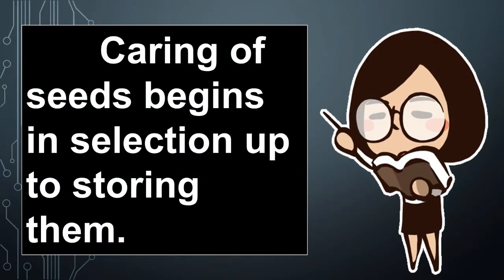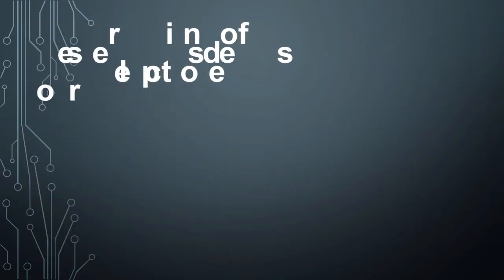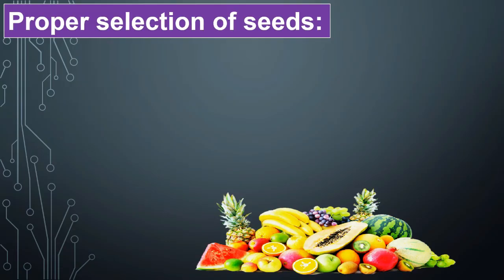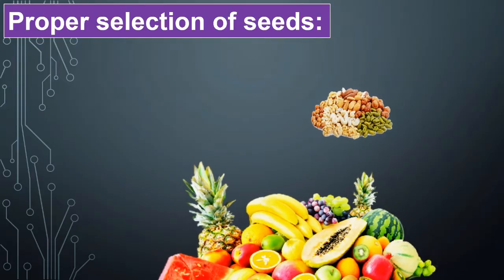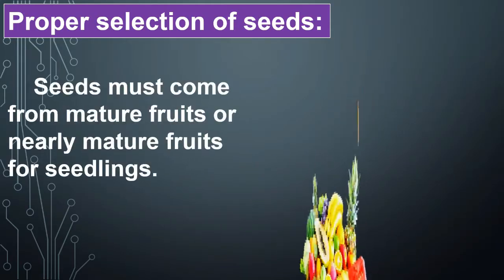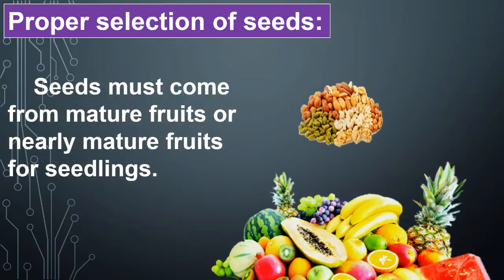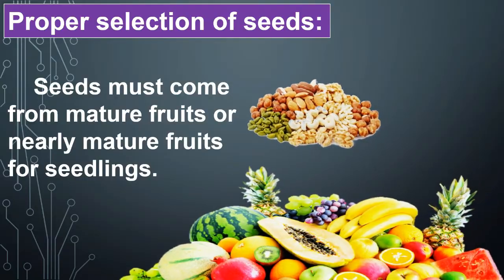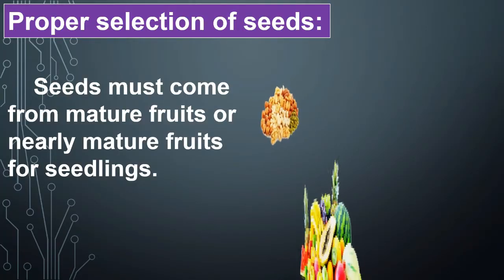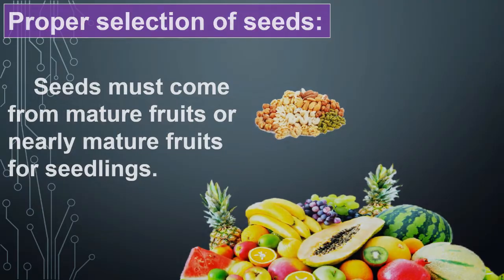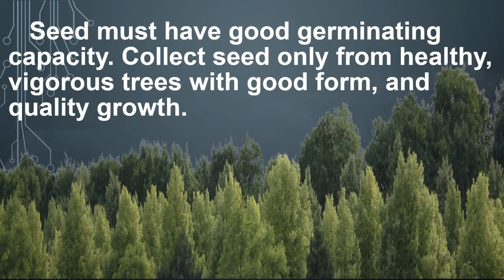Caring of seeds begins in selection up to storing them. Proper selection of seeds: seeds must come from mature fruits or nearly mature fruits for seedlings. Seeds must have good germinating capacity. Collect seeds only from healthy, vigorous trees with good form and quality growth.